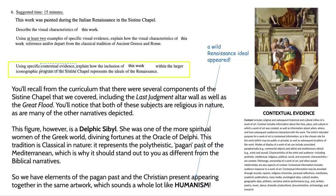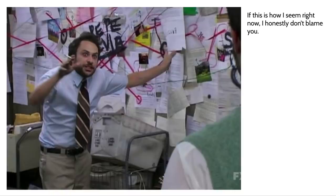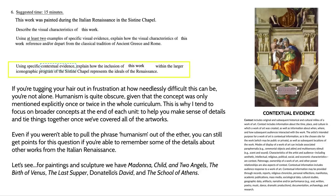This concept of having elements of the pagan past as well as the Christian present appearing simultaneously is basically the Renaissance concept of humanism. If this seems convoluted, I honestly don't blame you — drawing these connections gets a little complex. If you're tugging your hair out in frustration at how needlessly difficult this can be, you're not alone. We only mentioned humanism once or twice in the whole curriculum, and a lot of times these prompts are designed in such a way that you don't necessarily have to use the word 'humanism' to get those points. This is why I tend to focus on broader concepts in class at the end of the unit, doing those charts with rows and columns to figure out what's happening in the time period that is shaping what kind of artwork is being made and why.